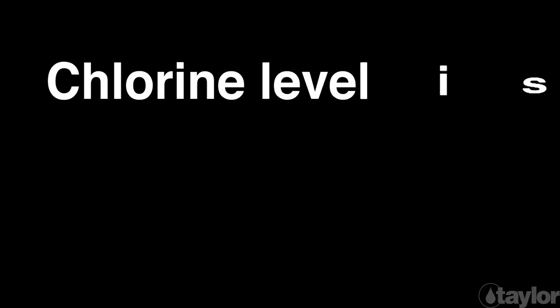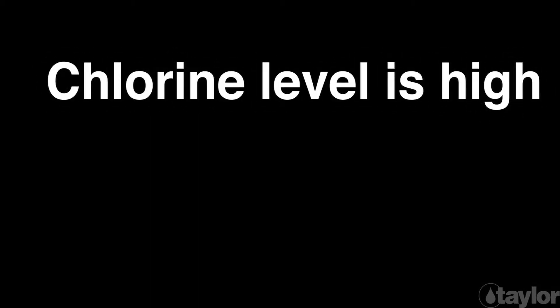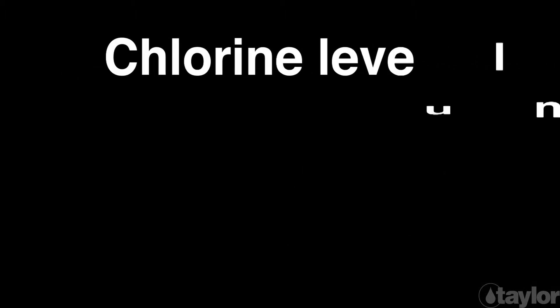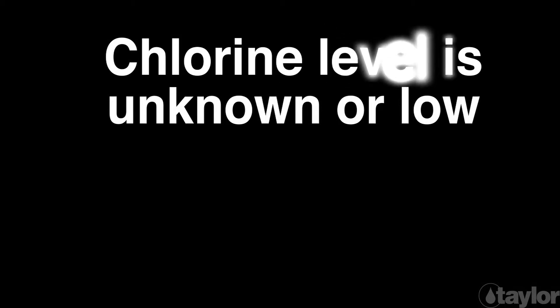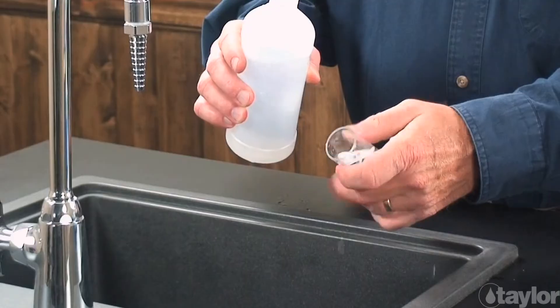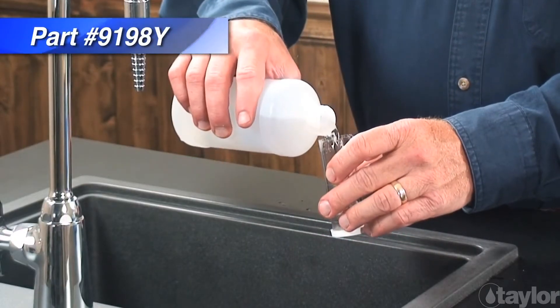First, decide which drop equivalents to use. If you suspect the chlorine level is high, use one drop equal to 0.5 parts per million and a 10 ml sample. This will save time and titrating reagent. If you do not know the chlorine level or you suspect it is low, use one drop equal to 0.2 parts per million and a 25 ml sample. This demonstration assumes the chlorine level is unknown, so we will use a 25 ml sample.